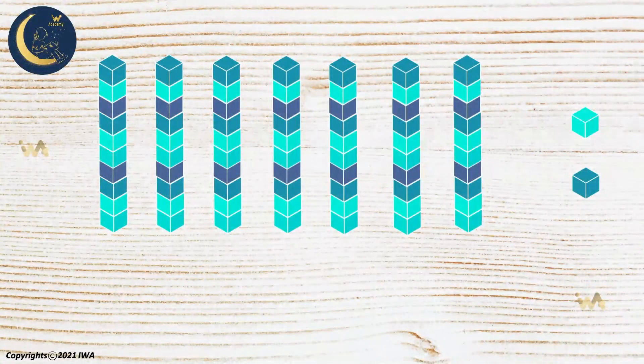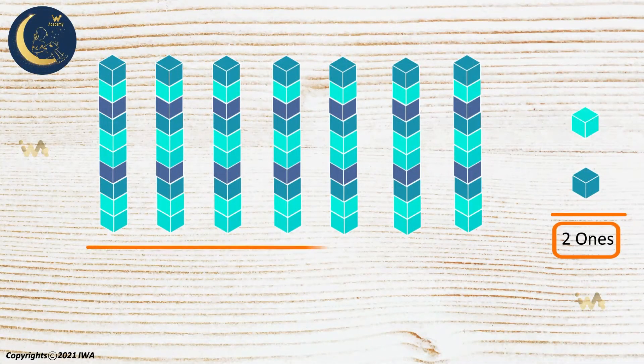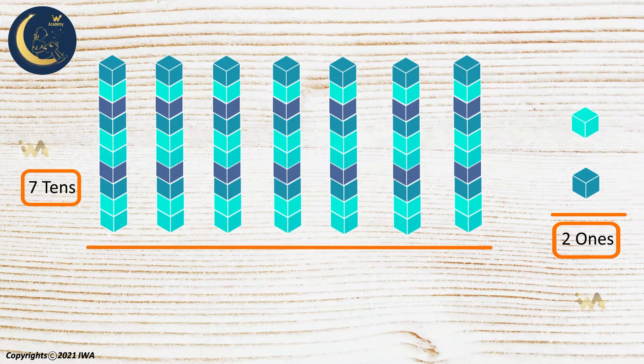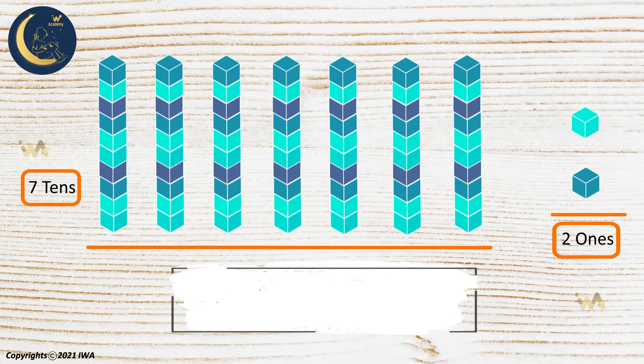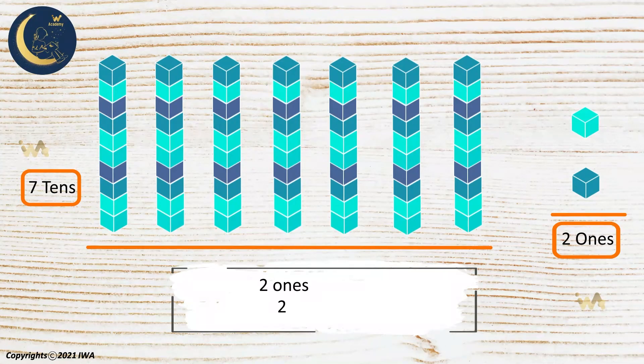The cubes are made up of two ones and seven tens. Let's see the place value of each number. Number two, as in two ones, has the place value of two. Meanwhile, number seven, as in seven tens, has the place value of 70.